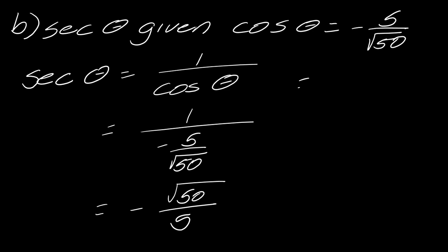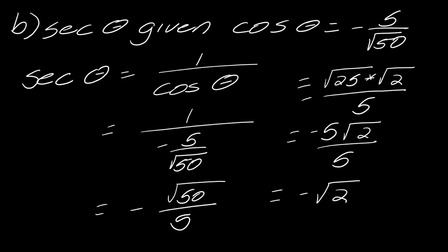But wait, we're not done. There's actually some simplifying you can do with this. Square root of 50 can be simplified to the square root of 25 times the square root of 2. I can write this out like this, and so this becomes negative 5 times the square root of 2 over 5. This actually just equals the negative square root of 2. There's a little bit extra simplification in there that you can do in this case, so just watch out for them.